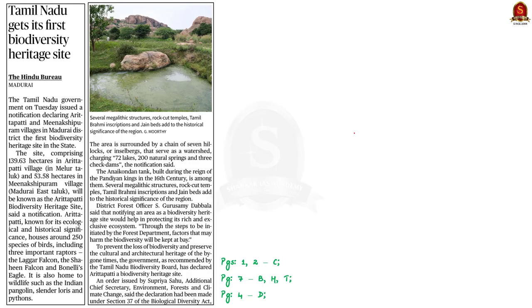Have a look at this news article. Tamil Nadu government declared Aritapatti and Meenakshiburam villages in Madurai district as the first biodiversity heritage site in the state, now called the Aritapatti Biodiversity Heritage Site. This site is known for its ecological and historical significance — around 250 species of birds inhabit this area, including three important raptors: the Laggar falcon, the Shaheen falcon, and the Bonelli's eagle. It is also home to wildlife such as the Indian pangolin, slender loris, and pythons.